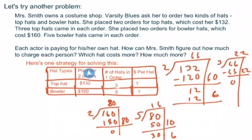The top hat. It was the price for two orders. It said it was $132. There were three hats in each of those orders. So, I'm trying to figure out my price per hat. Same thing here. The bowler hat. $160, two orders, five in each one. I'm trying to figure that out.